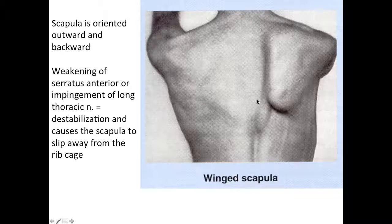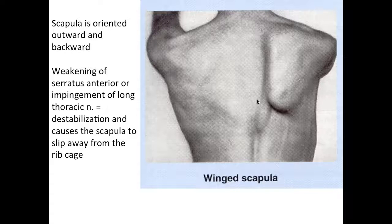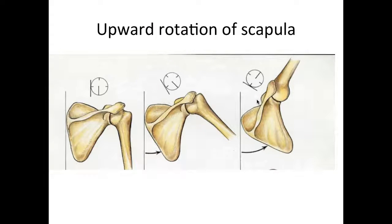Sometimes the scapula is oriented outward and backward when the serratus anterior is weakened, and we call this a winged scapula. This is usually due to impingement or pinching of the long thoracic nerve, which is the specific nerve that innervates this muscle. This causes destabilization and the scapula slips away from the rib cage — the serratus anterior really helps keep it in place.